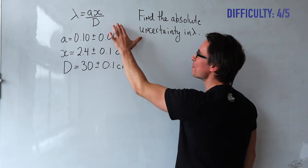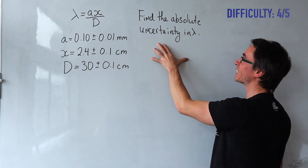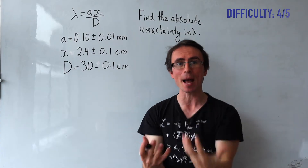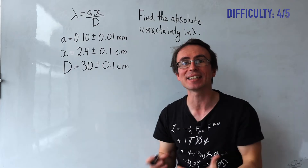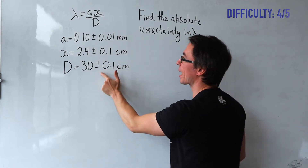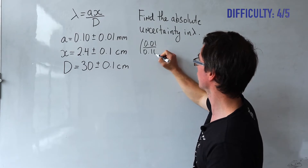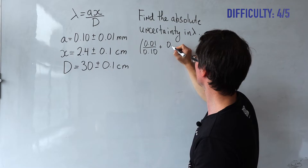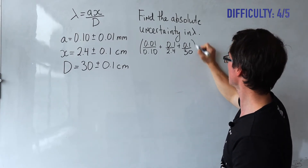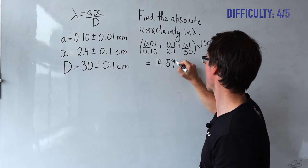Next question is on the famous Young's double slit formula: lambda equals AX over D. We're given all this data and need to find the absolute uncertainty in the wavelength. Because we are multiplying and dividing quantities, we no longer add absolute uncertainties — we add percentage uncertainties. So: 0.01 divided by 0.10, plus 0.1 divided by 2.4, plus 0.1 divided by 30, all multiplied by 100 to get a percentage. This gives around 14.5%.